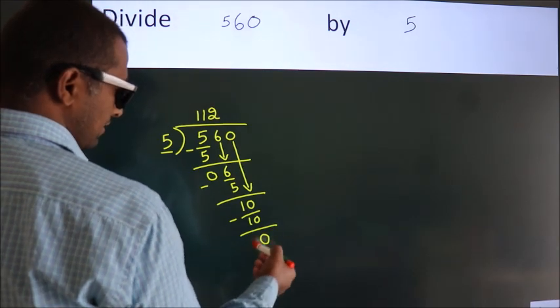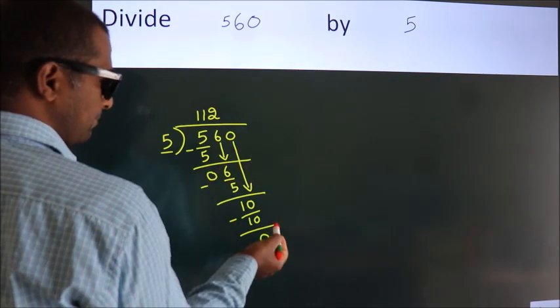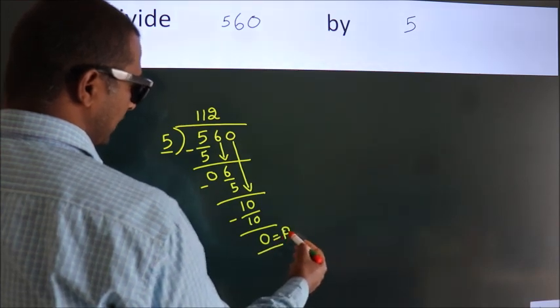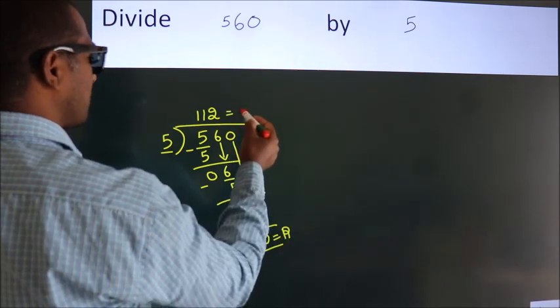After this, no more numbers to bring it down. So we stop here. This is our remainder. This is our quotient.